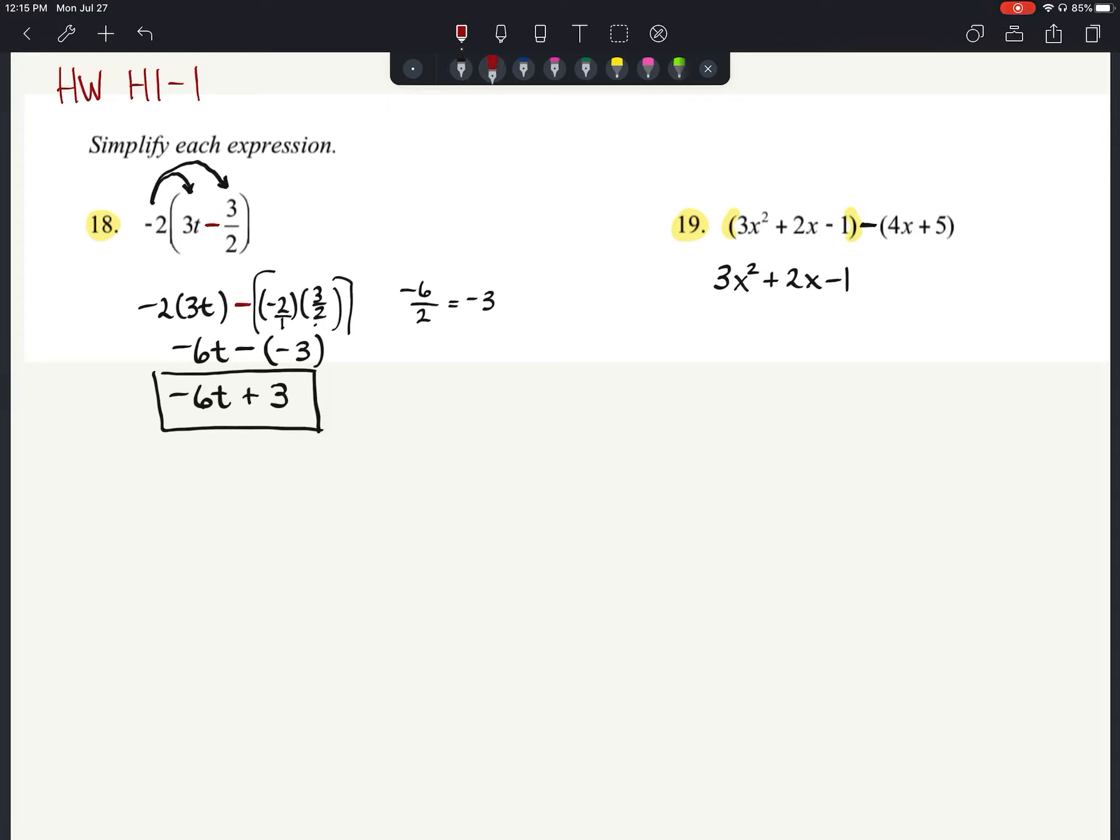Now we're going to have to look at the fact that we are subtracting a quantity. We are subtracting 4x, and we are subtracting a 5. So this is really like saying minus 4x minus 5.